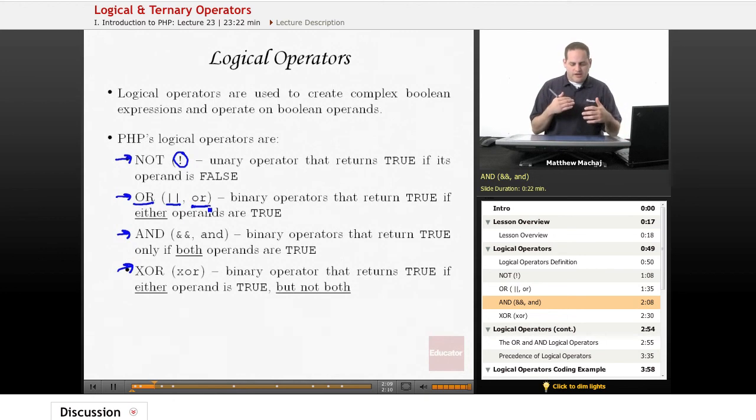And is the converse of the or operation, and it also has two ways to specify it: double ampersands or the and keyword. It's a binary operator that returns true only if both its left and right operands are true. If they're not both true, it returns false.